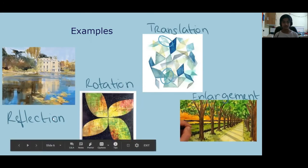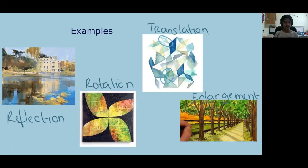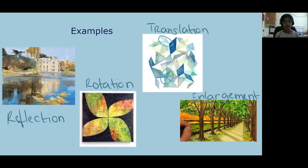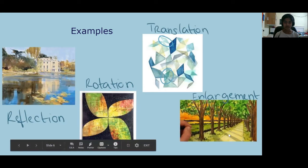And in this painting, the shape is being rotated and having different patterns on each side. Here the shape is translated into different spots in the image. And here we have enlargement, which is being used in perspective where the tree is being enlarged to give it more of a natural look. Thank you.